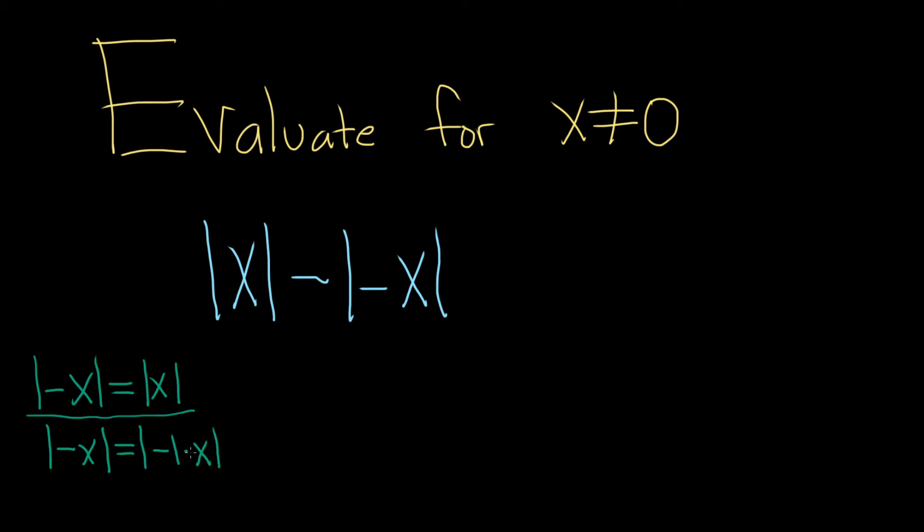And then you can use properties of absolute value that say, whenever you have the absolute value and you're multiplying, you can just take the absolute value of each piece like this.